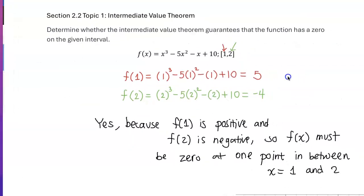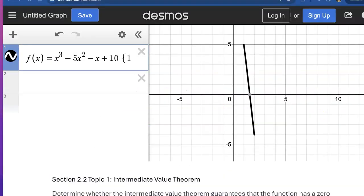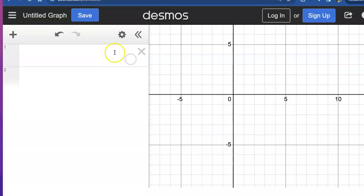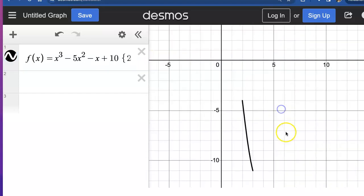So that's what this Intermediate Value Theorem will tell us. But look, if you graphed a function, now let's say that I change the domain a little bit. What if I'm looking at it from two to three of this function? One y value is negative 4 and the other y value is also negative 11. Both of them have the same sign, so it's not going to be guaranteed that it's going to hit zero at one point because they're both down in the negative.